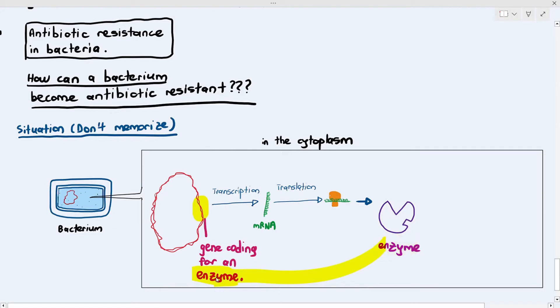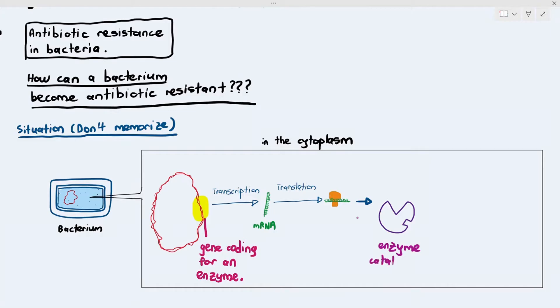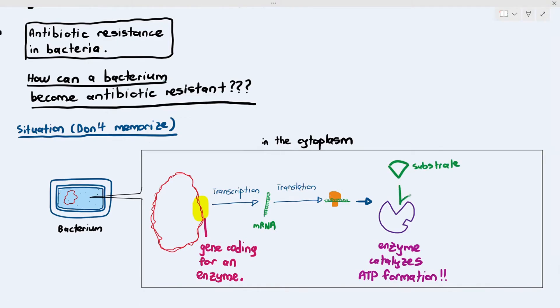Notice the shape of the enzyme — that triangular groove at the top is known as the active site, and the square groove is known as the allosteric site. As covered in chapter 3 on enzyme inhibitors, this enzyme catalyzes ATP formation in the bacteria. The substrate binds to the enzyme, ATP is formed, and the bacterium survives.